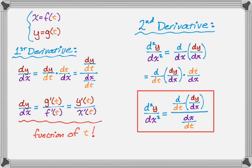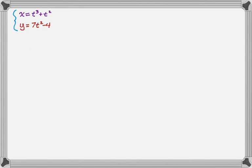So let's do an example and see how it works. So we have x is t cubed plus t squared, and y is 7t squared minus 4. So to find this, we need to find dx dt and dy dt.